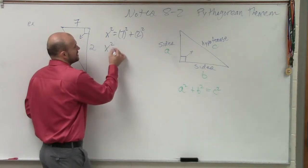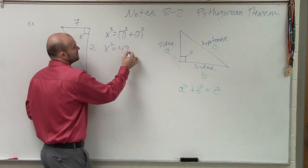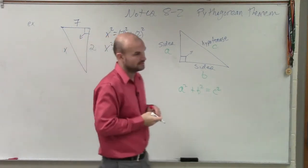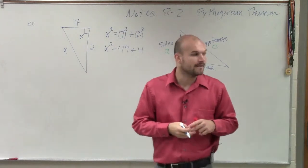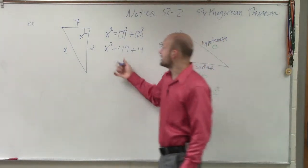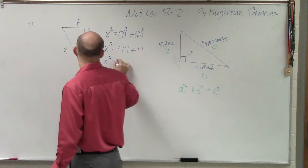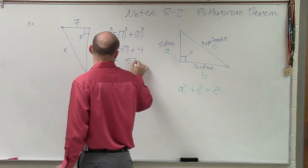So we have x squared equals 49 plus 4. There we go. So then we have x squared equals 53.